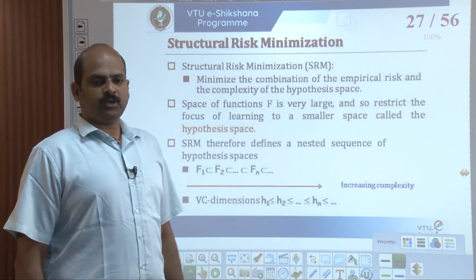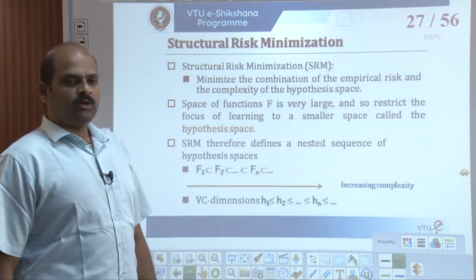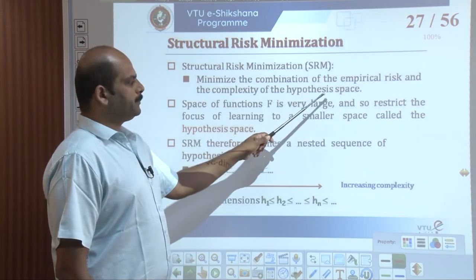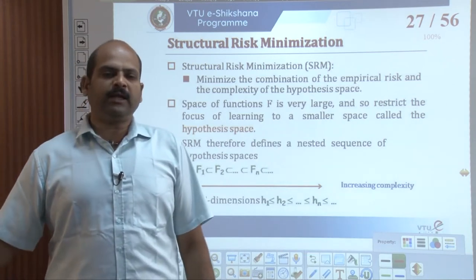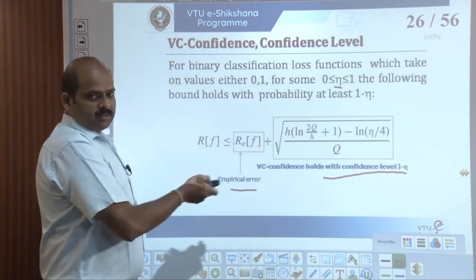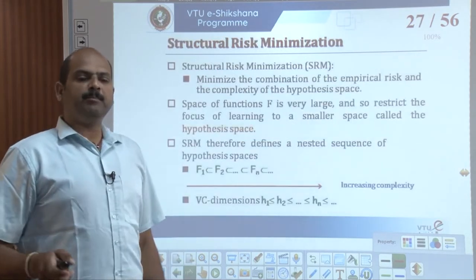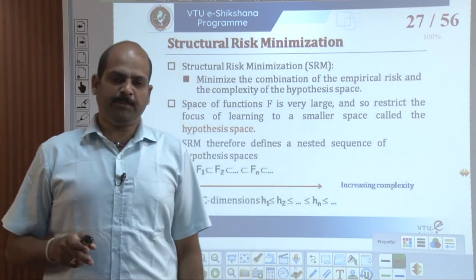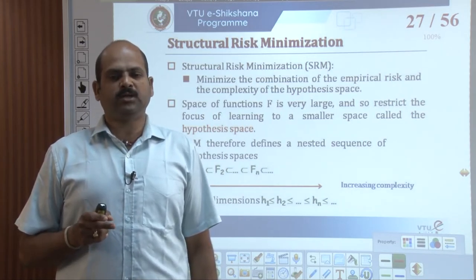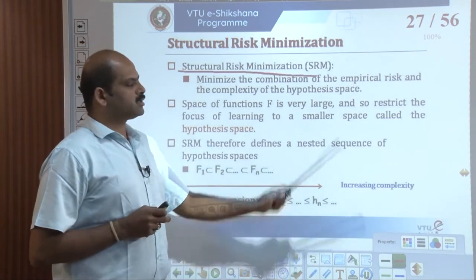Structural risk minimization, or SRM, minimizes the combination of empirical risk and the complexity of the hypothesis space. The above equation suggests the way to achieve good generalization by minimizing the combination of the empirical risk and the complexity of the hypothesis space. This is the philosophy that underlies the concept of structural risk minimization.